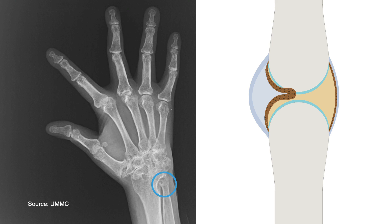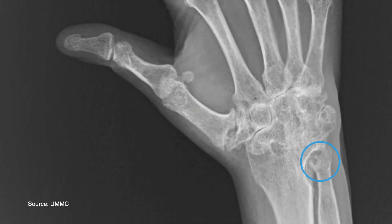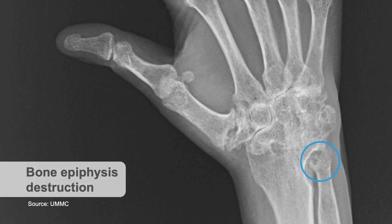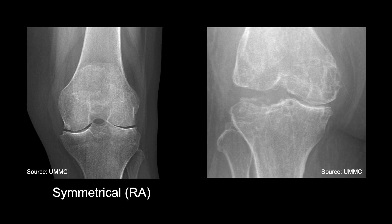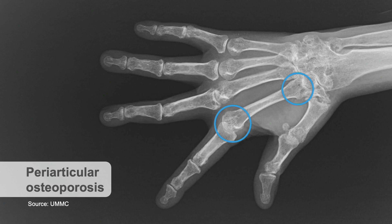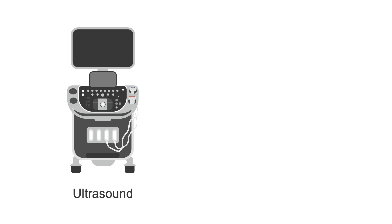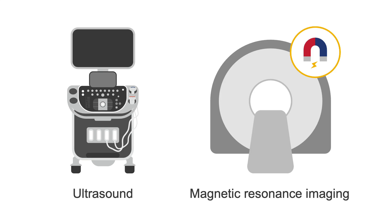On imaging, the bone erosions classic for RA are in the marginal areas of the joints, at the edges, because that's where the cartilage is thinnest and the inflammatory pannus is located. However, not all RA patients have bone erosions, and in severe cases, complete destruction of the bone epiphysis can occur. The joint space narrowing in RA is usually symmetrical, as opposed to the asymmetrical narrowing seen in osteoarthritis. Periarticular osteoporosis is another characteristic of RA, which you will not see in osteoarthritis or psoriatic arthritis. Other imaging modalities like ultrasound and MRI can detect subclinical synovitis when the history and/or physical exam are confusing.